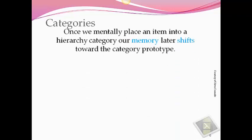If we think about categories, once we mentally place an item into a hierarchy category, this affects our memory and perception of those objects or ideas later on. As our memory decays a little bit, when we try to recall information, we have what's called a prototype shift — where we may actually misremember information more towards a prototype of a category.